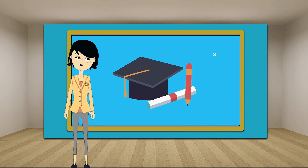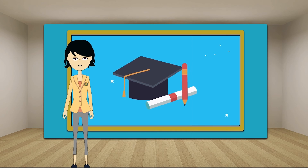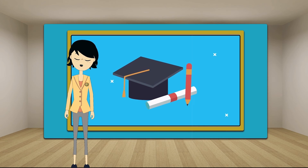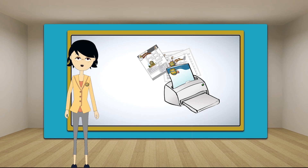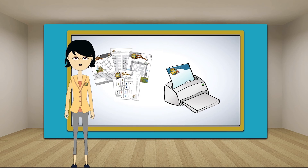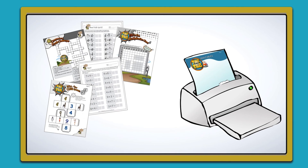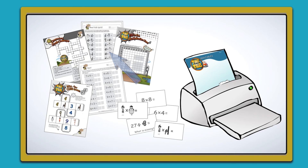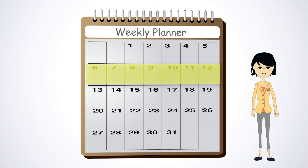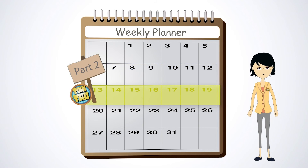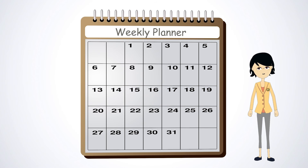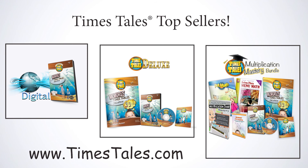Congratulations! You have made it to the final step of Part 1. Now it's time to try out your new multiplication skills with a written test. The tests are located in the printables that came with your Times Tales Program — these can be printed directly from your computer. Before you take the real test, you might want to take the Practice Test first, which includes the characters. I recommend allowing at least one week after completing Part 1 before beginning Part 2. During this time, the multiplication facts can be reviewed and practiced. Wasn't that easy?